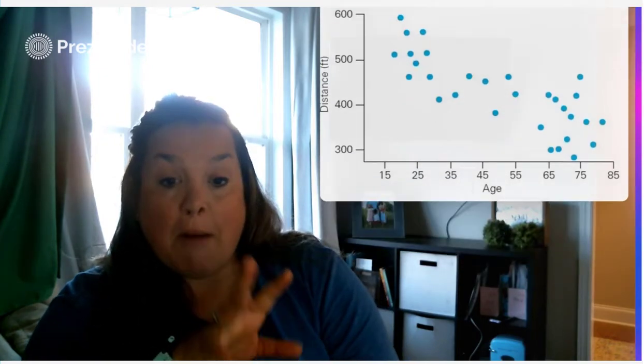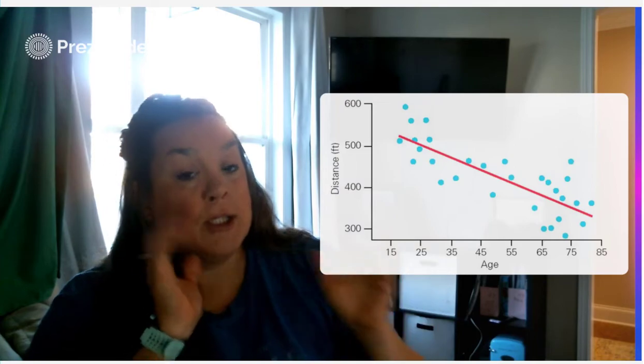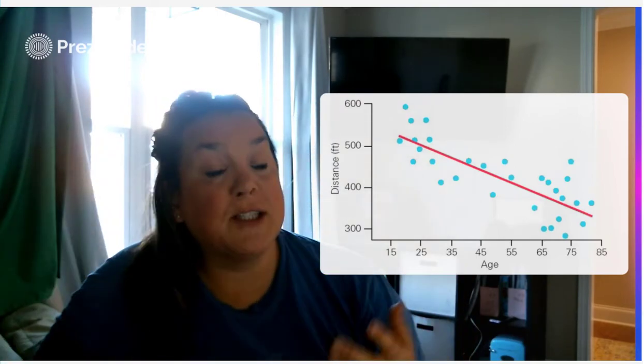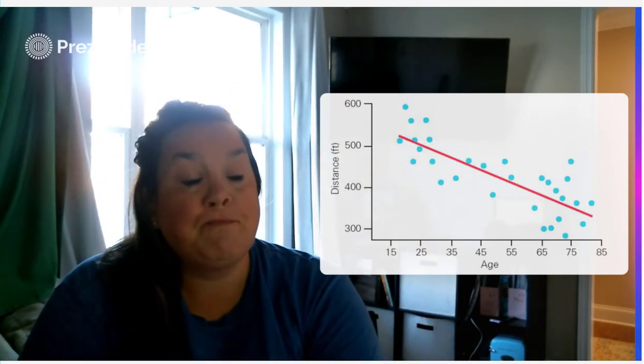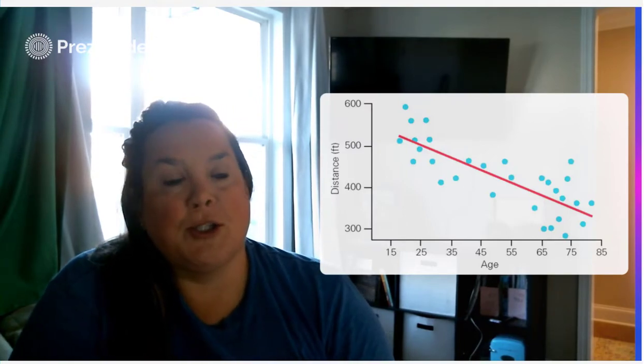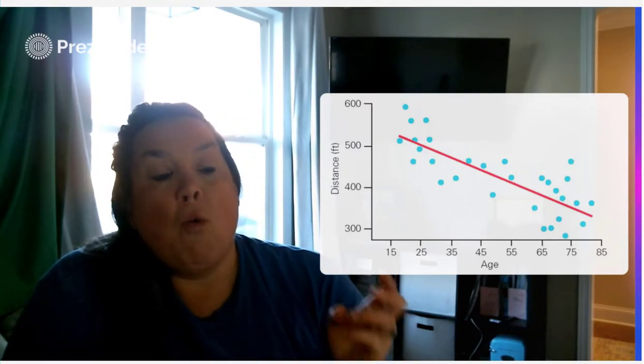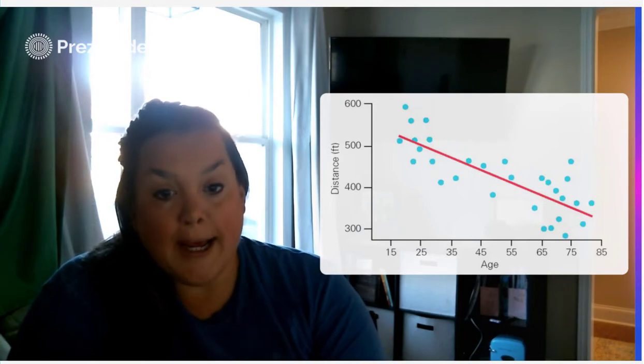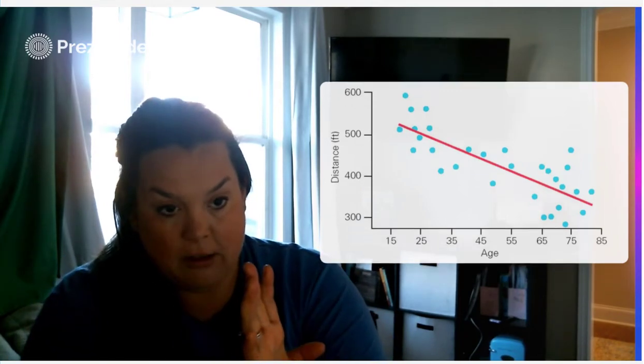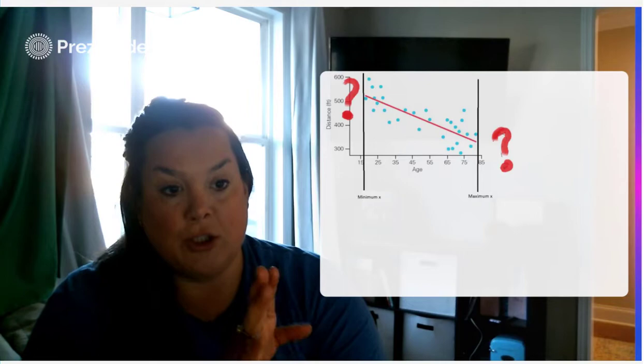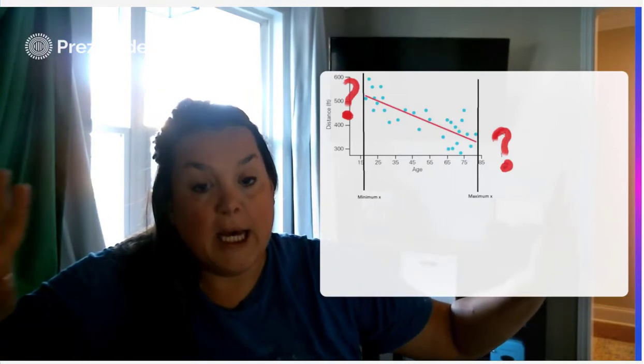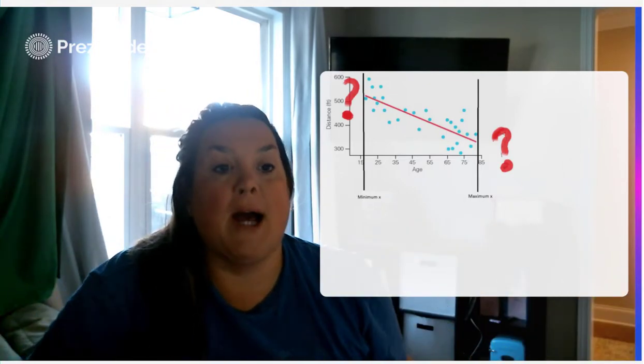So this was our scatterplot for age and distance to read a highway sign. And from that, remember, we created that regression line, which that line is from that regression equation or that line produces the regression equation. So when you try to use this line, this equation to predict outside the minimum x or the maximum x...